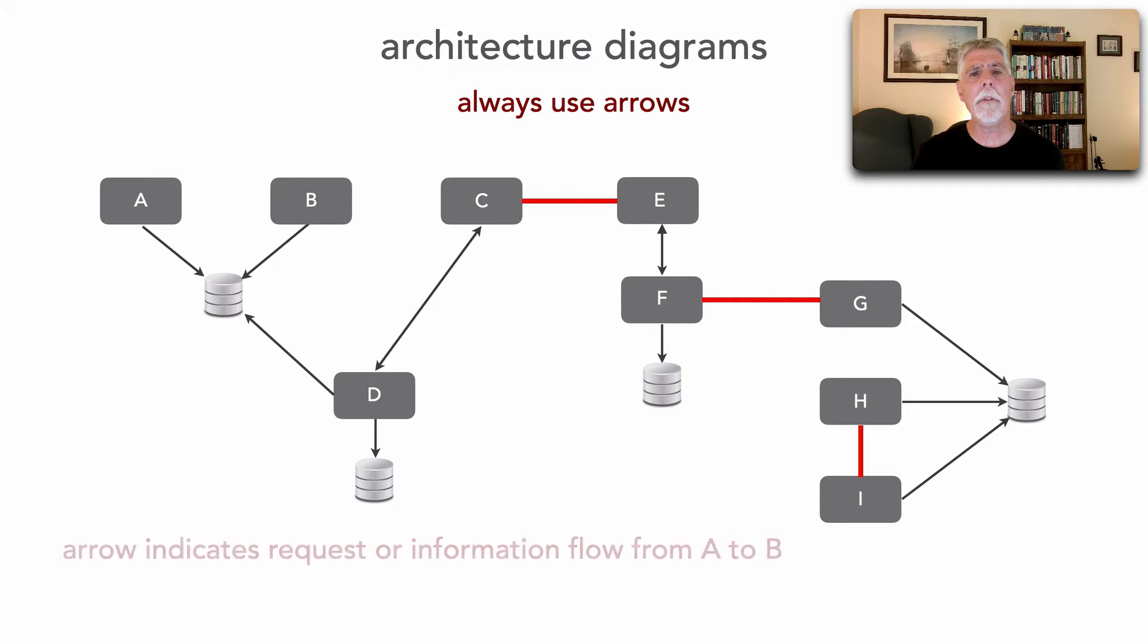However, the point is when we use arrows, what I like to do is that arrow indicates a flow, either a request flow from one service to another, like from C to E, or information flow that's going from one service to another.